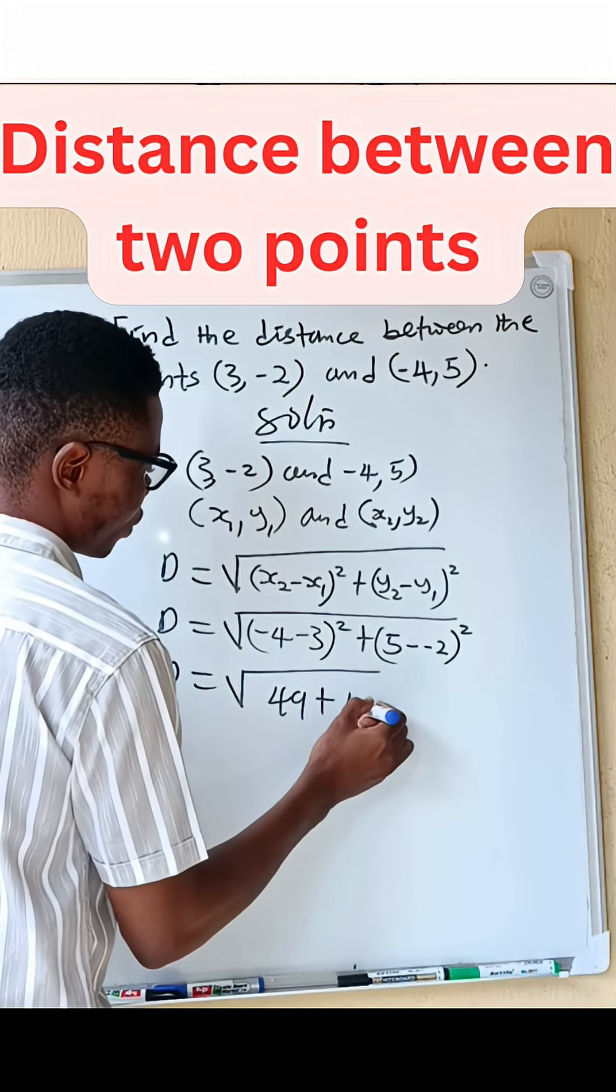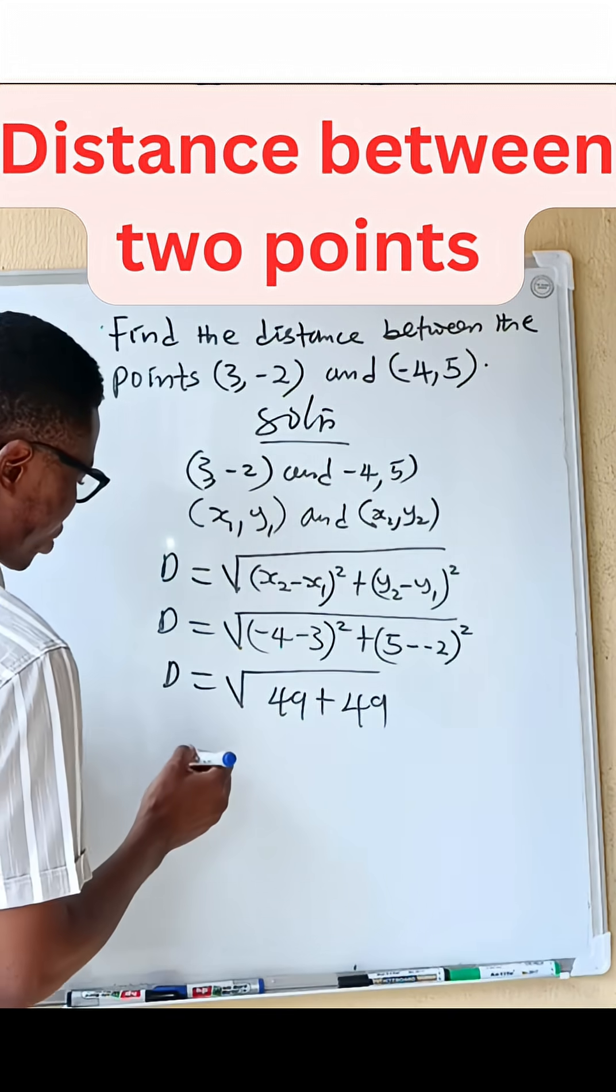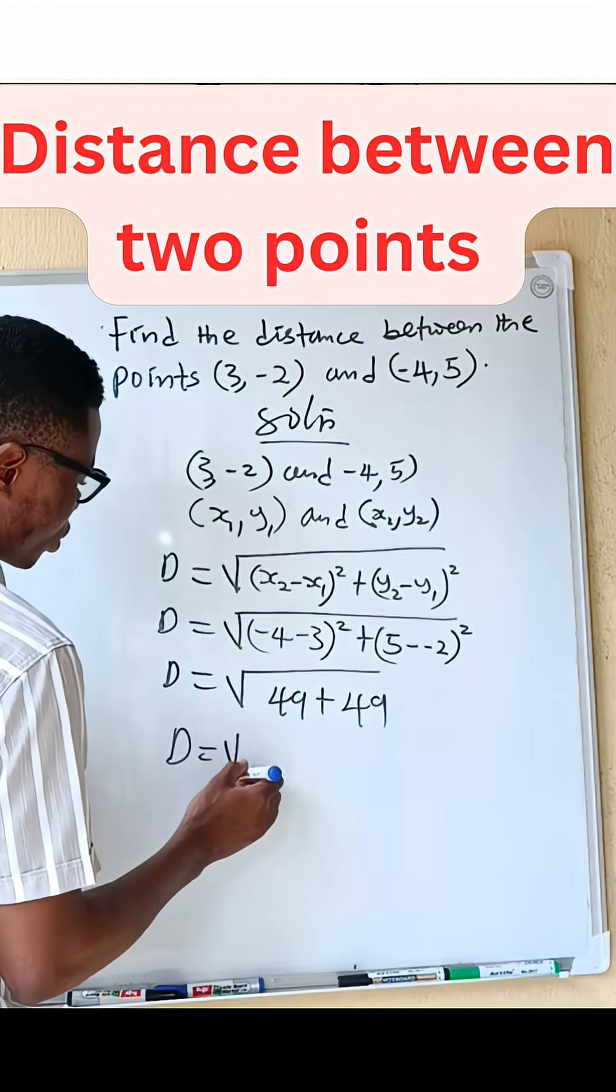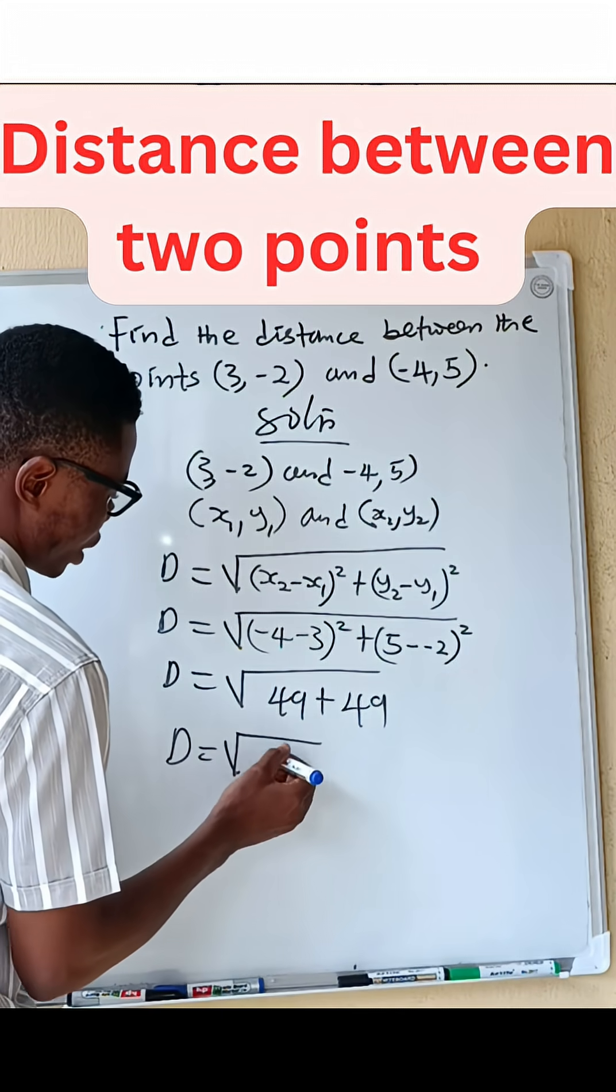That is 7 all squared is 49. So you now have D equals root of 49 plus 49, which is 98.